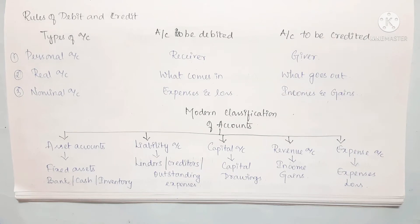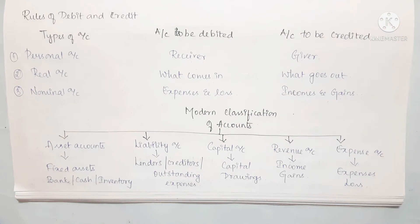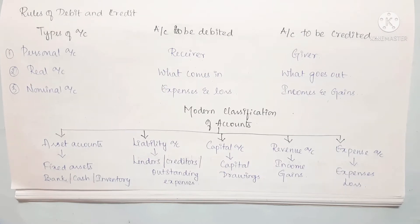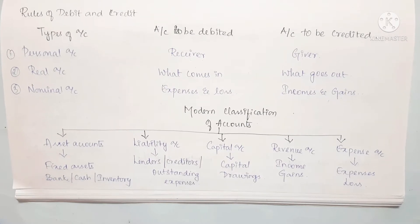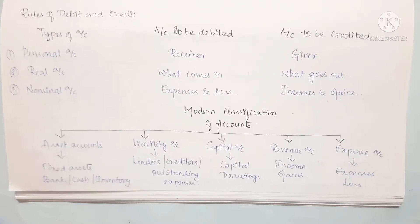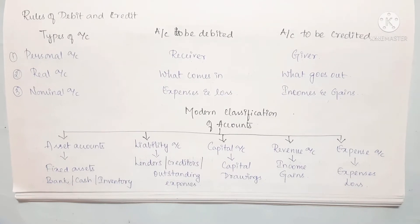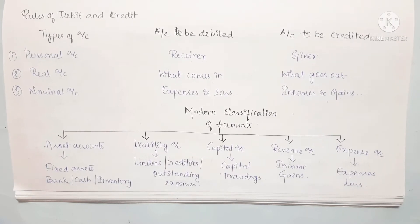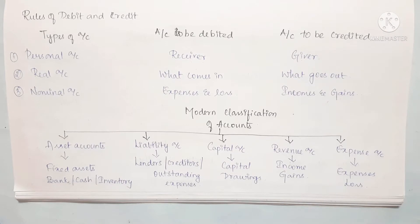Hi friends, welcome back to my channel Savvy Learner. In this video, we will talk about CBSE syllabus 11th Accountancy Chapter 6 - Accounting Procedures: Rules of Debit and Credit.